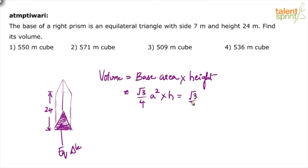Substitute root 3 by 4 a square is 7 square because side is 7, height is 24.